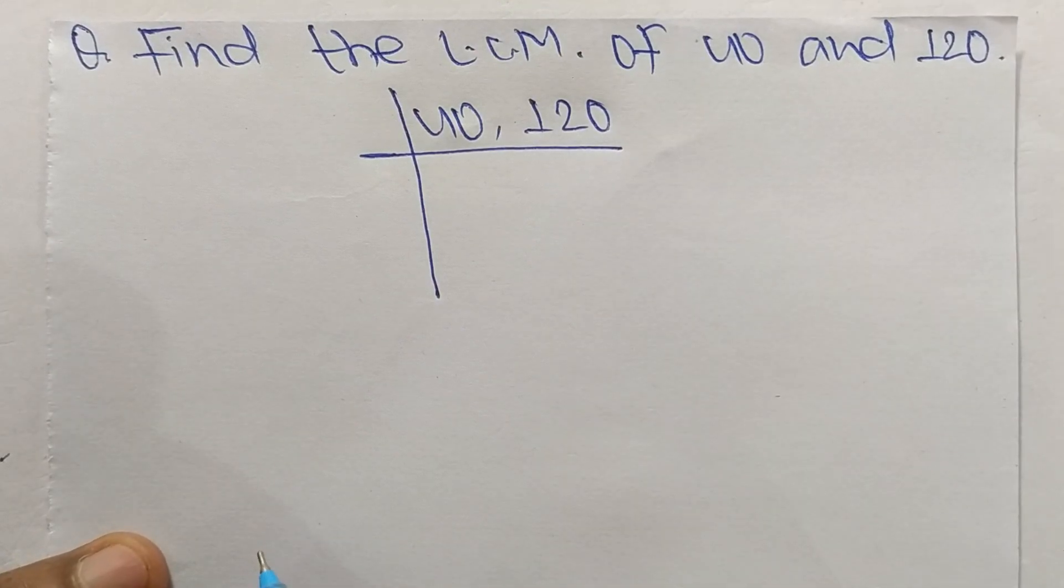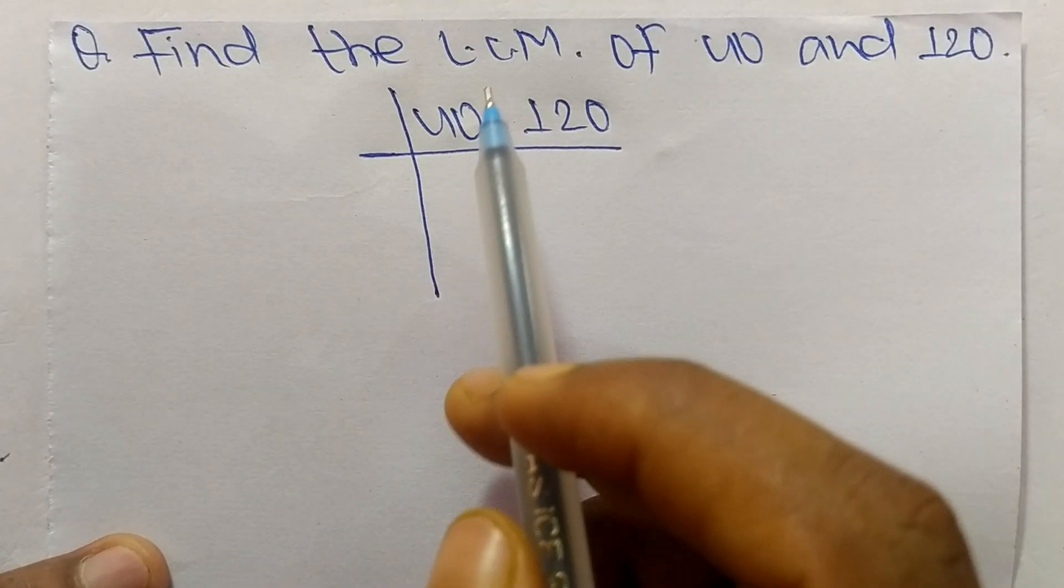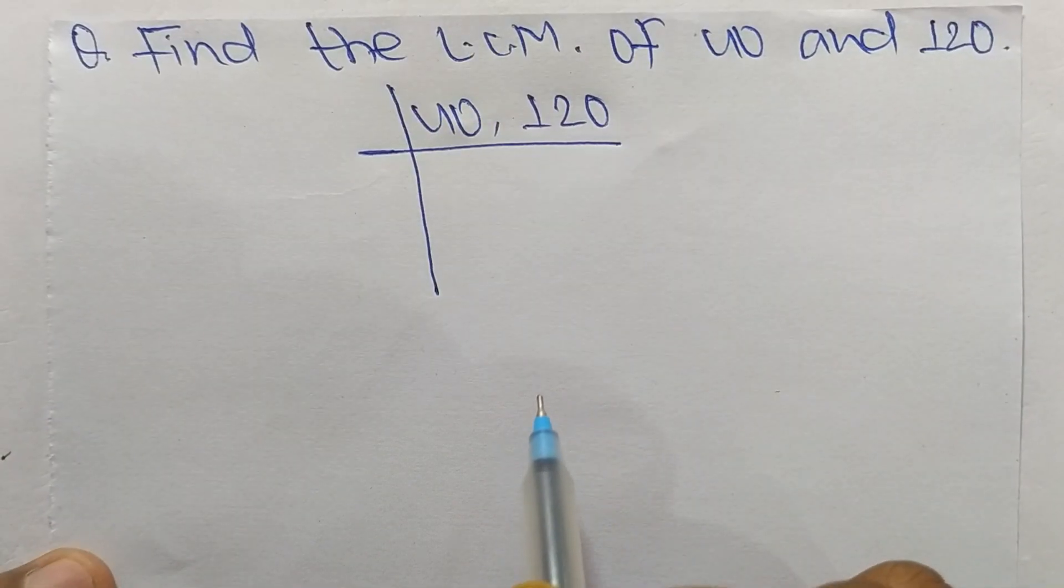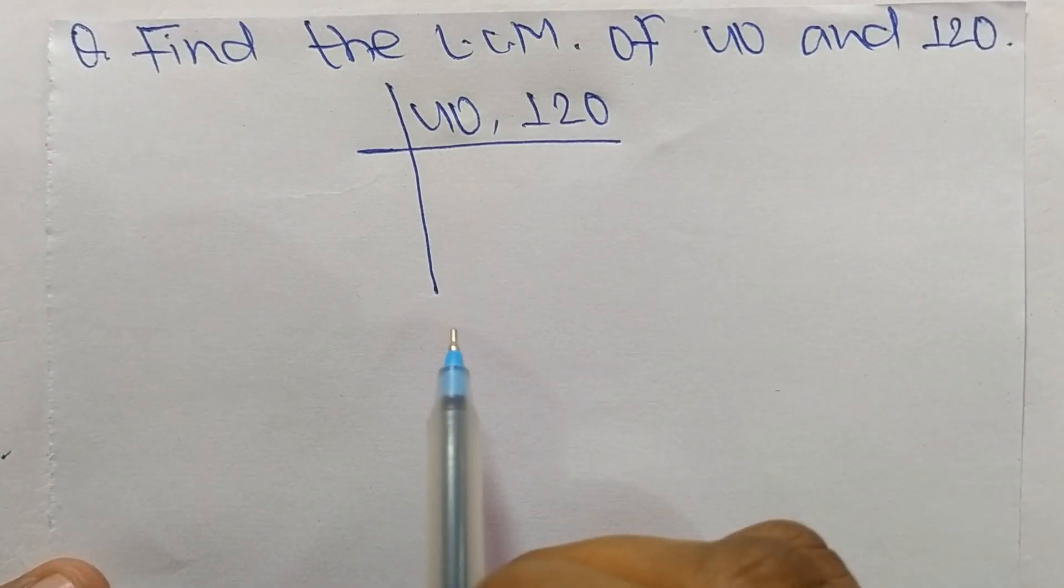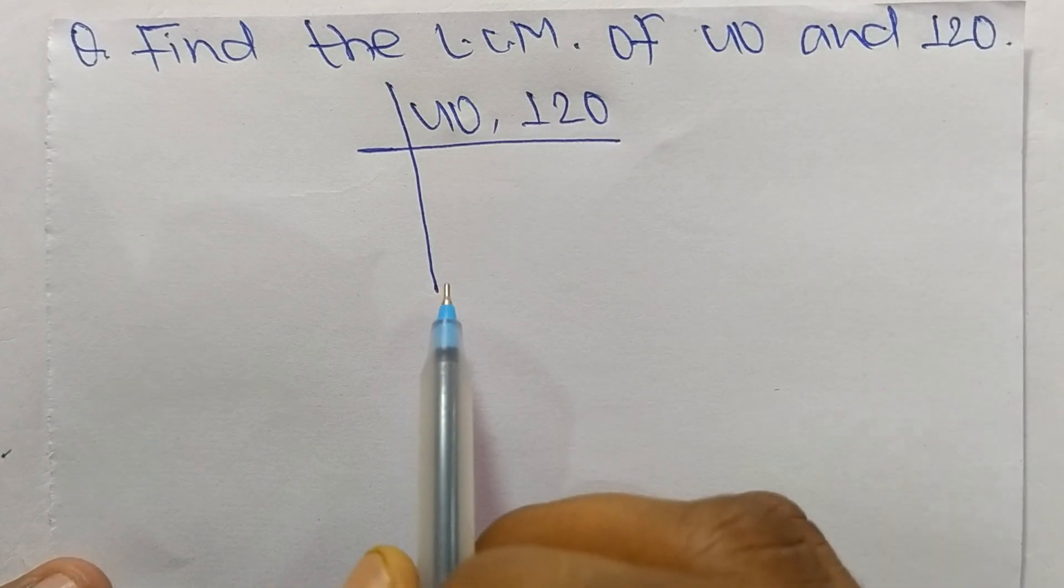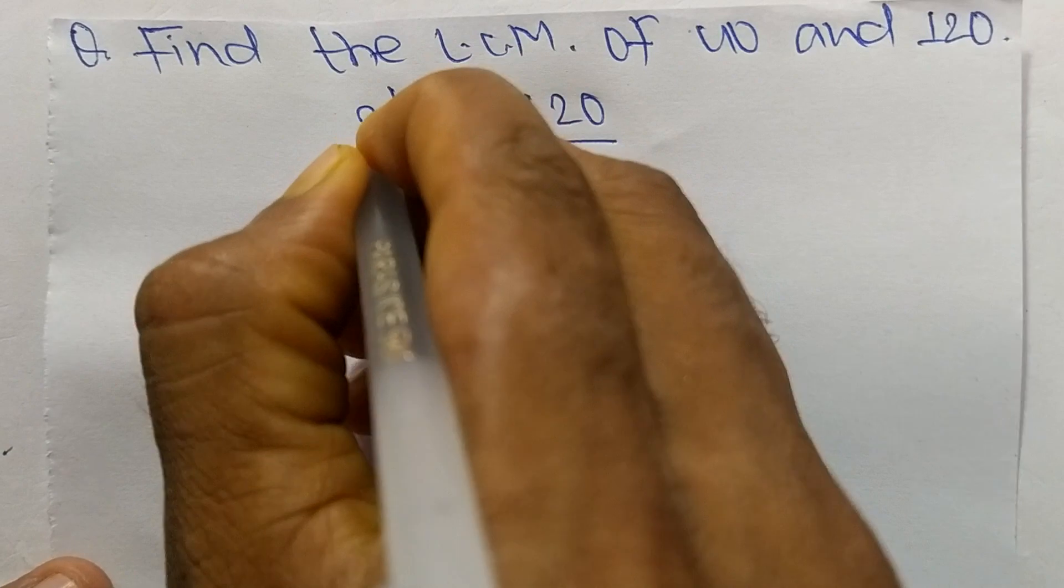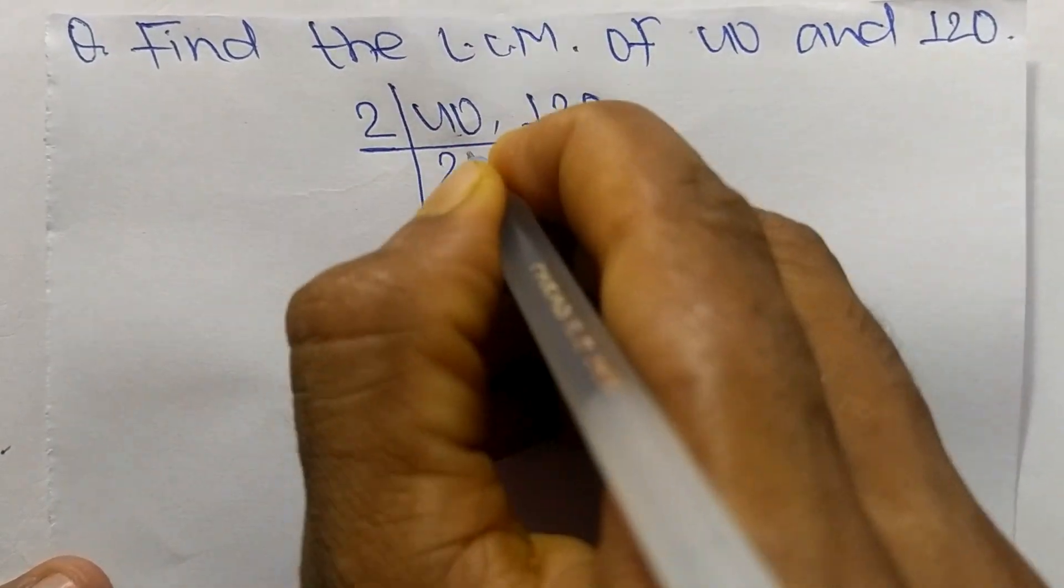Today in this video we shall learn to find the LCM of 40 and 120. First of all, we choose the lowest number that can exactly divide 40 and 120. The number is 2. So 2 times 20 mean 40, 2 times 60 mean 120.